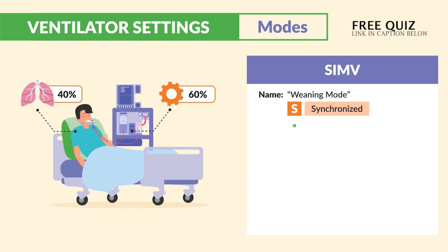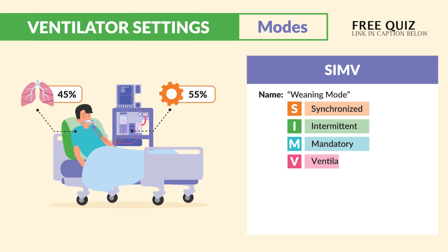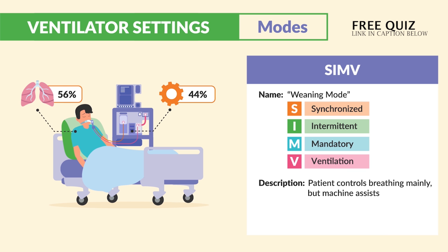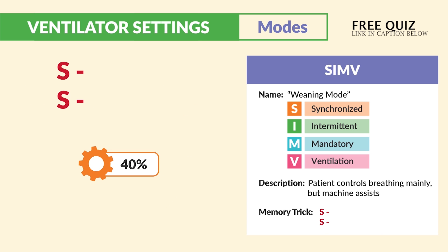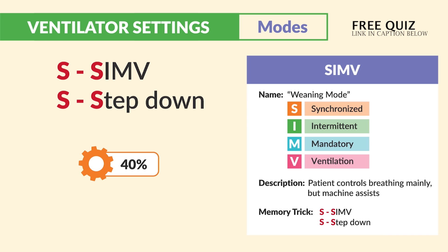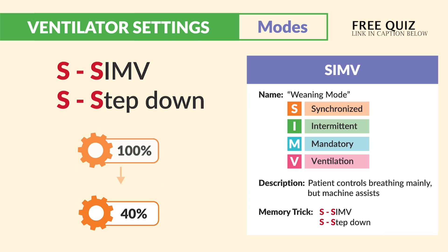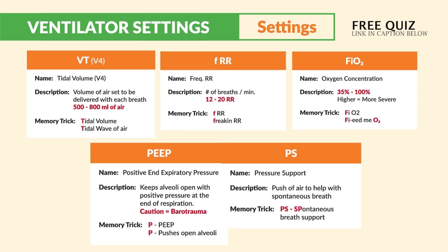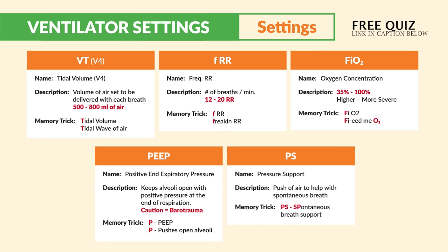Next is SIMV — synchronized intermittent mandatory ventilation — known as the weaning mode. The patient controls breathing mainly and the machine assists. Think of the double S's: SIMV is step-down. We're stepping away from full control, allowing the patient to take control of their own respirations.